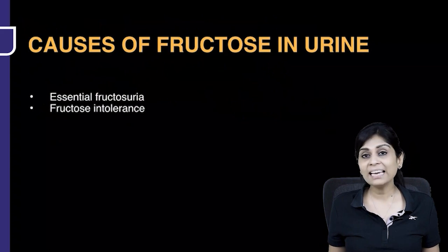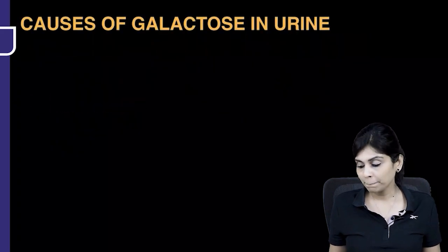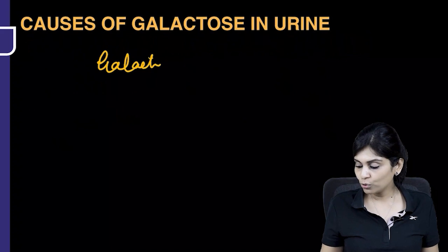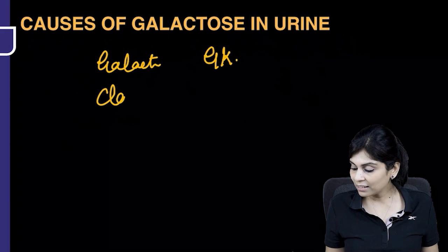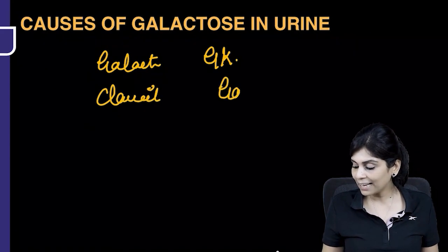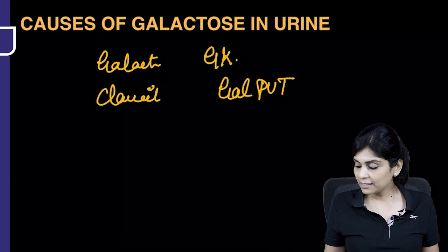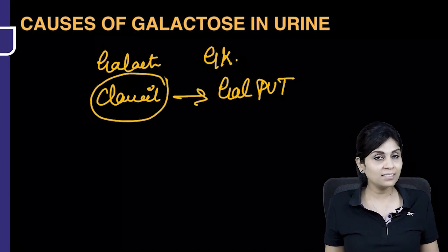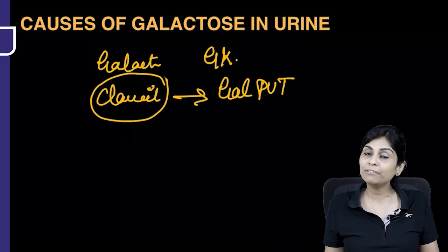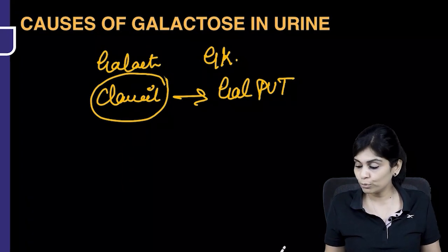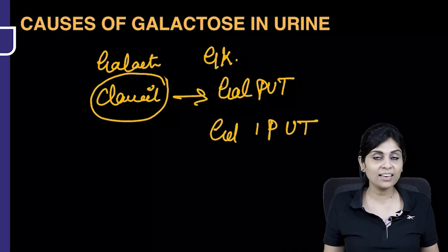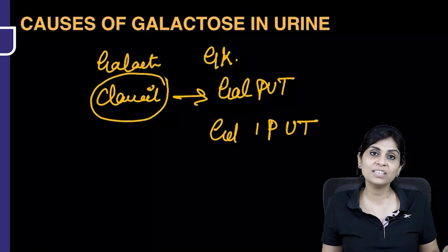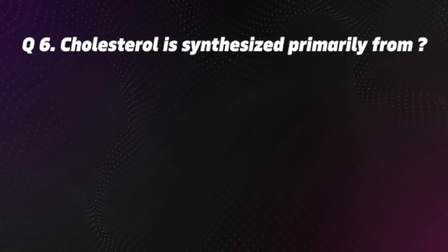Question 5. Galactose is found in urine in galactosemia due to galactokinase deficiency, or in classical galactosemia caused by the defect of galput. Classical galactosemia is caused by the defect of galactose-1-phosphate uridyl transferase (galput).